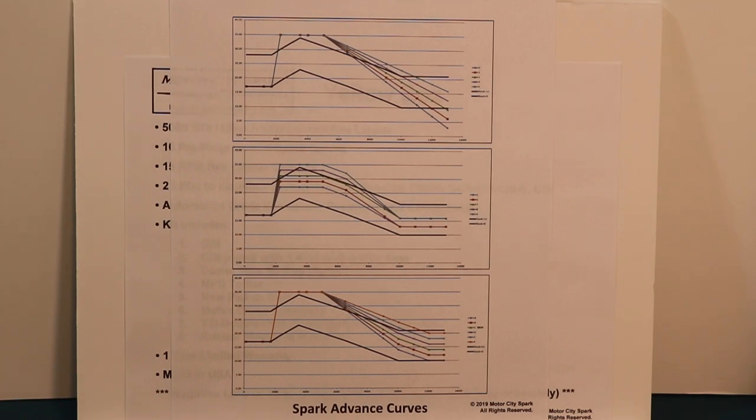The bottom set of curves are the optimal spark curves that are in the black box. And I personally like these curves because they give you good overrev power.